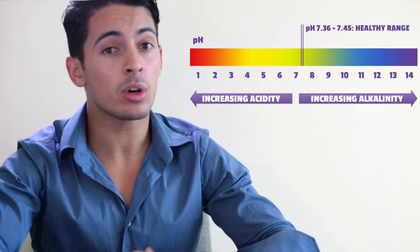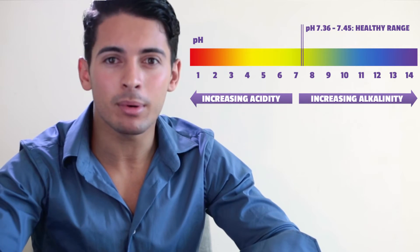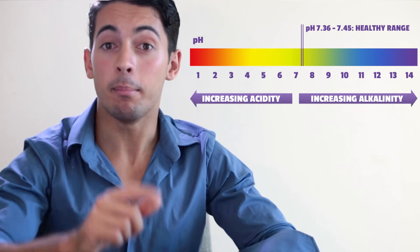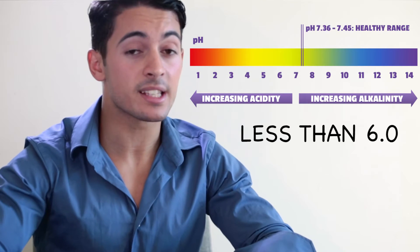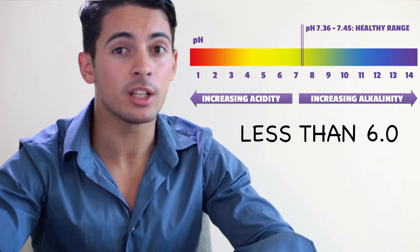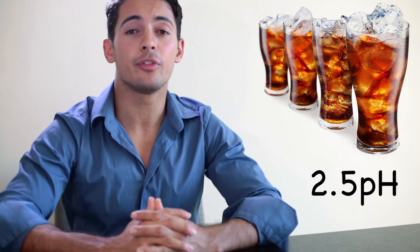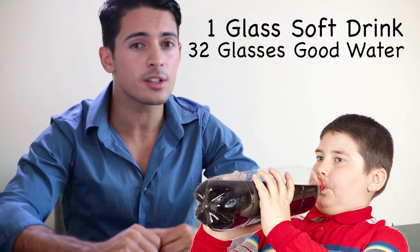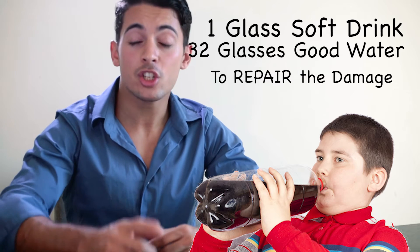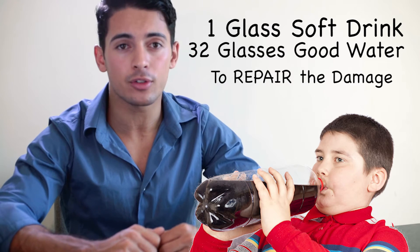Now, I want you to get the water that you're drinking at home, take the label and see what's the pH on it. Most of them are less than 6. So when you take a water that has a pH below your blood pH, you'll have to put your body to work just to balance the values. Now, just for you to have an idea, a soft drink has a pH of around 2.5. A child that takes one glass of soft drink needs to take at least 32 glasses of good water just to repair the damage of that glass of soft drink.